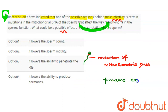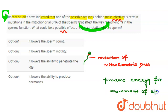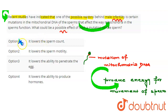Moving towards the options, the first option given is: it lowers the sperm count. This option is wrong, because as we discussed, the mitochondria here produces energy which is involved in sperm movement. So it has no concern with lowering the sperm count.